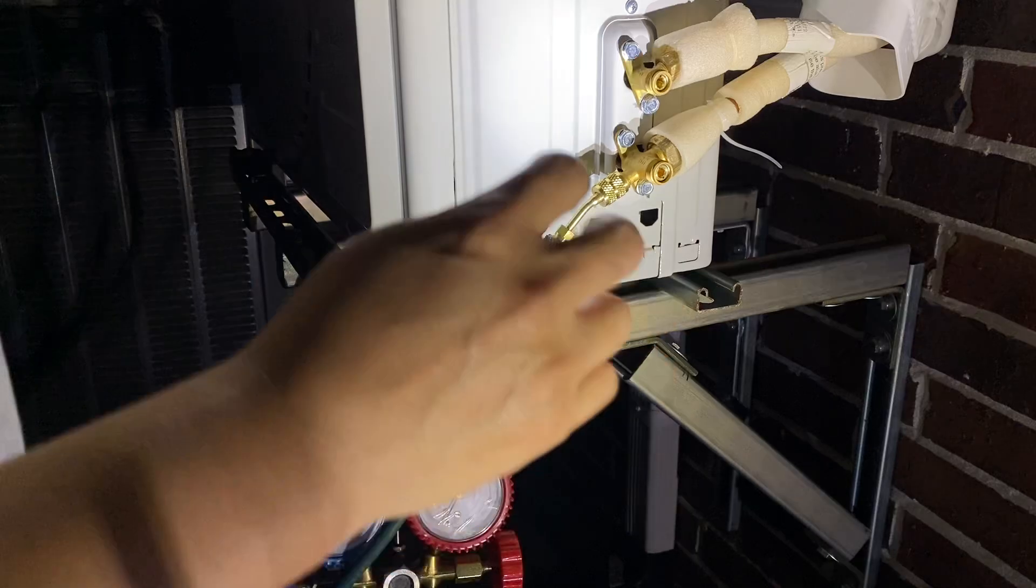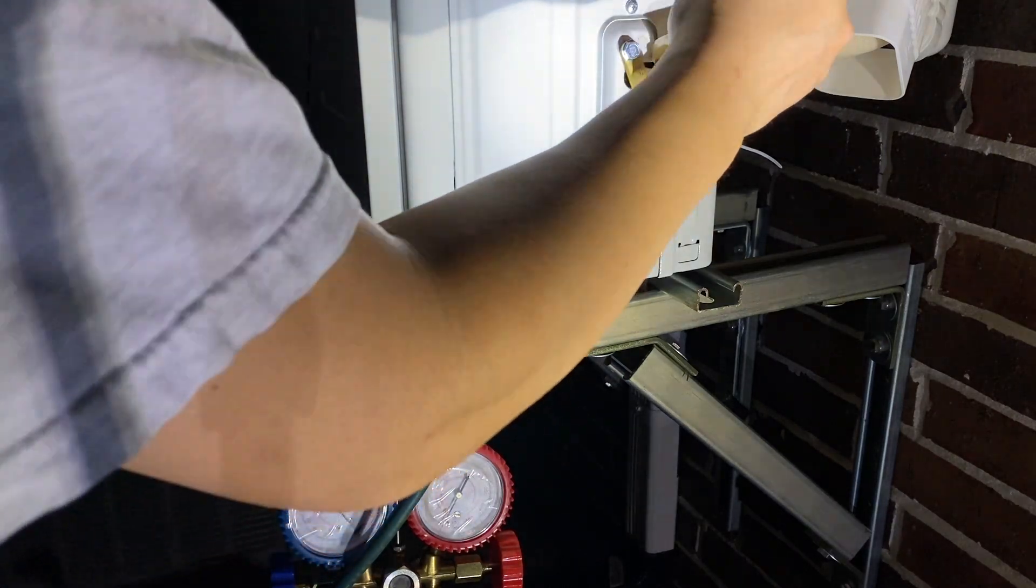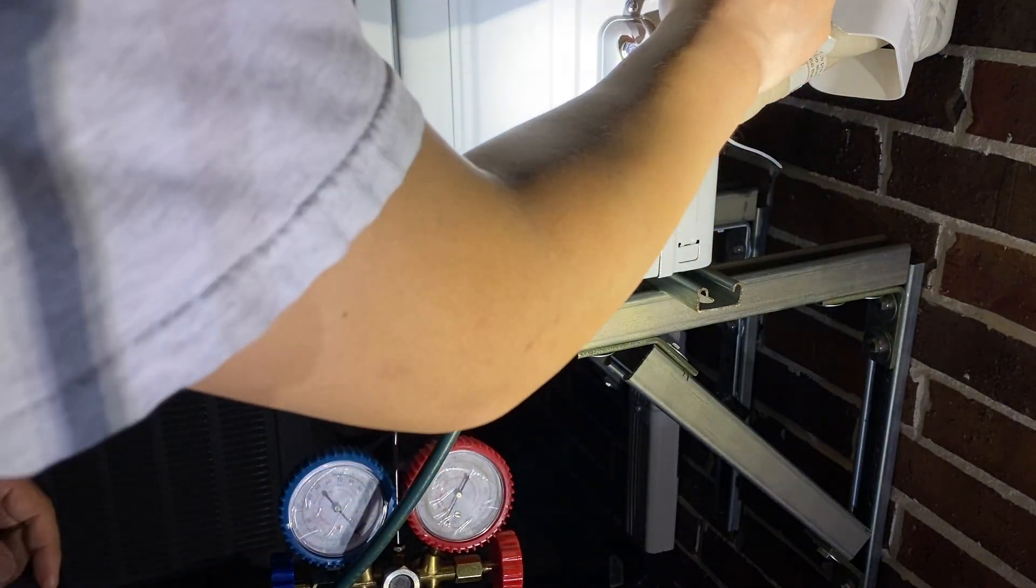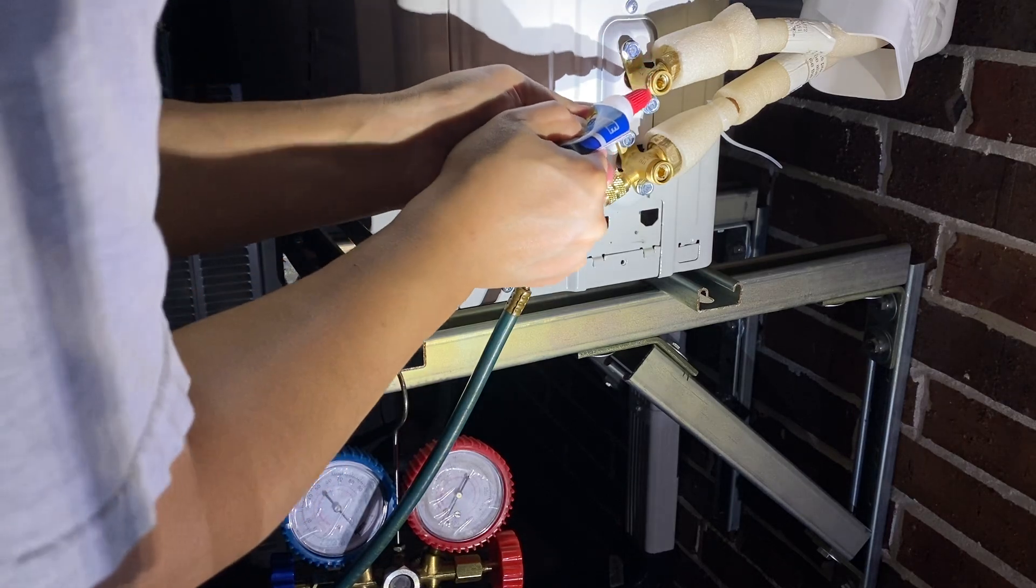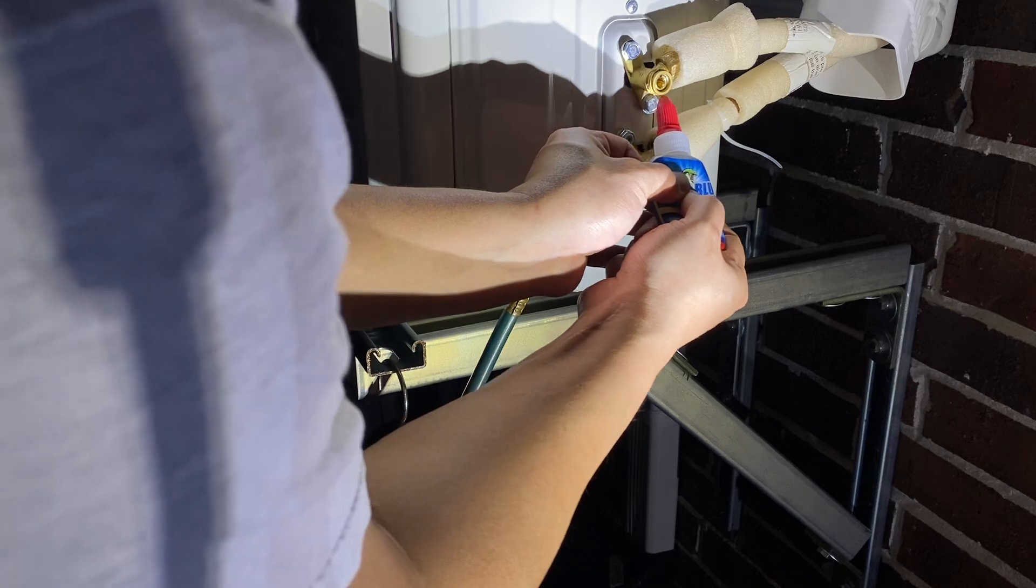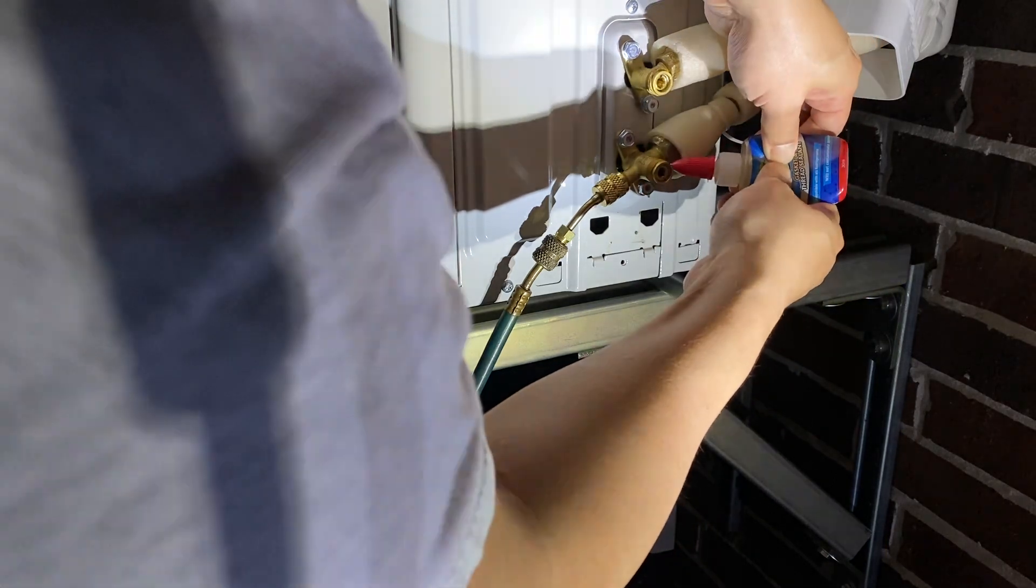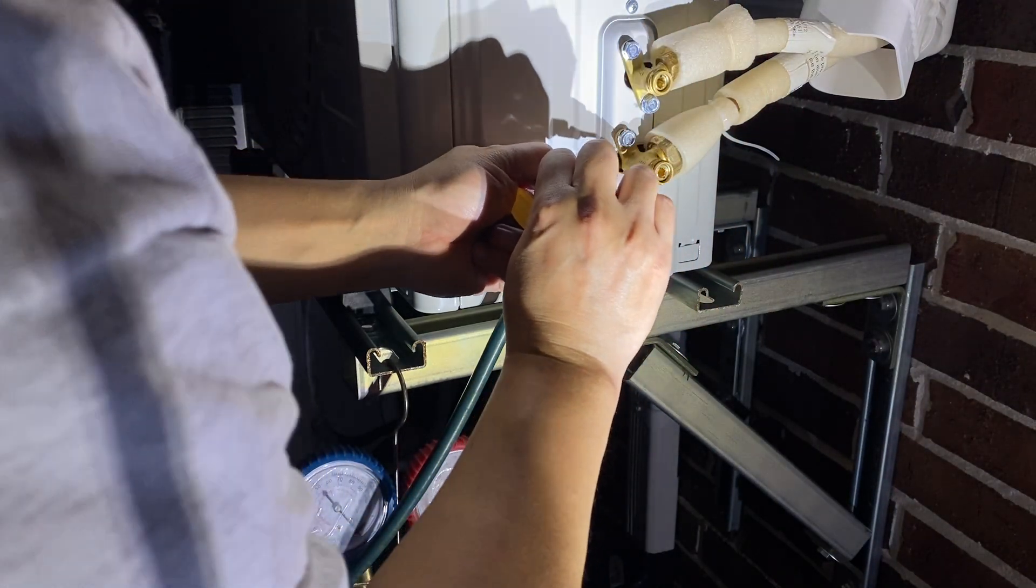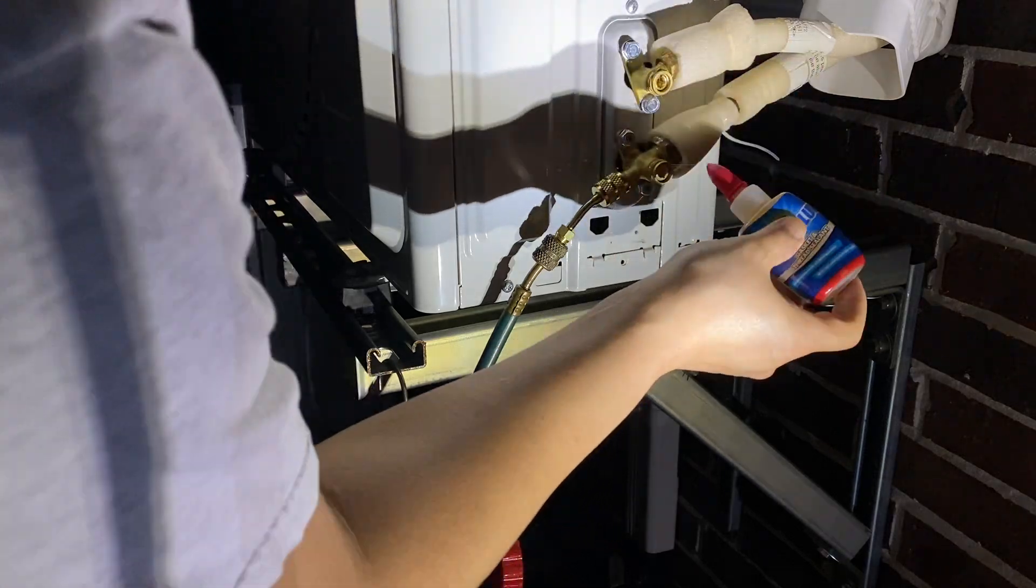And then all we do is cap it. You don't have to do this, but I want to put a little bit of nylock blue on here just to have a good seal. I don't want to have to do this again. You don't have to do this; I just feel like it. There we go. Don't need that much.